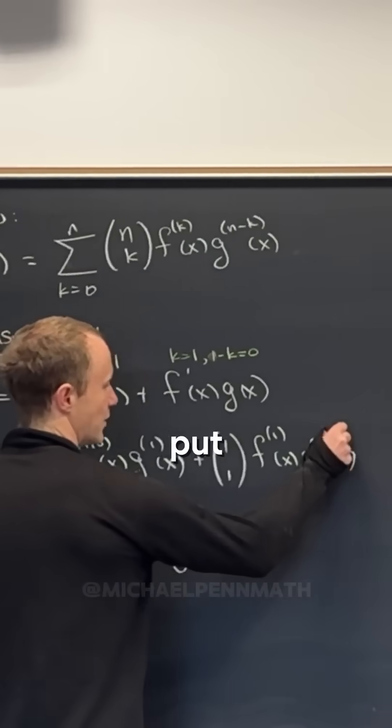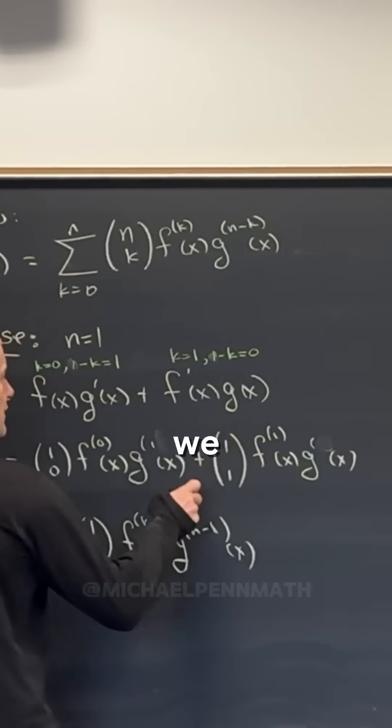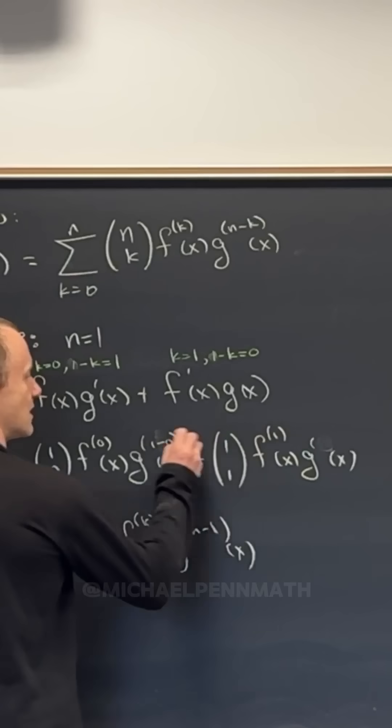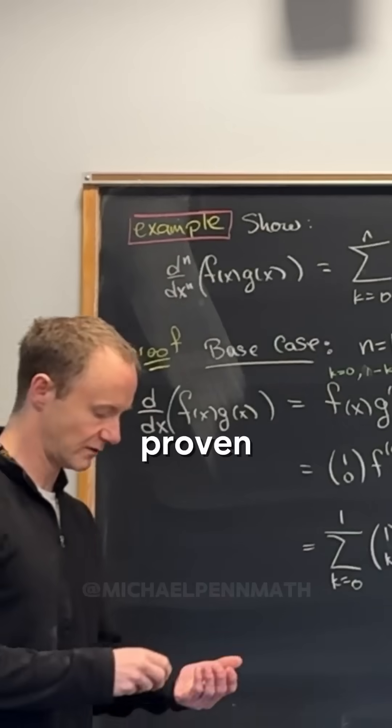Now if we wanted to put a little more structure in here—I don't know that this is strictly necessary—but we could write this as 1 minus 0 and this is 1 minus 1, so it looks exactly like that up there. But anyway, the base case is proven.